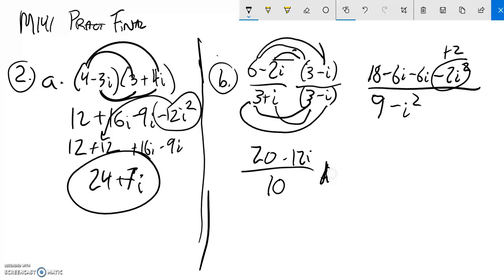That tells me I can do a little bit of division. Notice everything is divisible by 2 here. So I'm going to take out a 2. So I've got 10 minus 6i over 5. There it is.